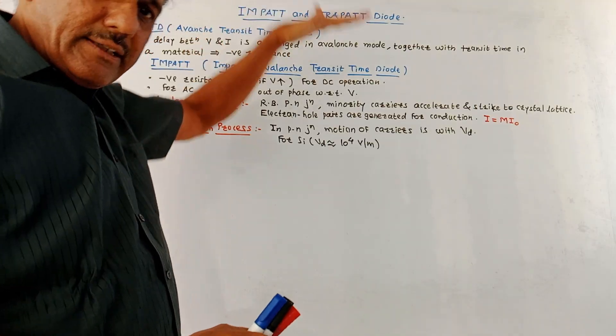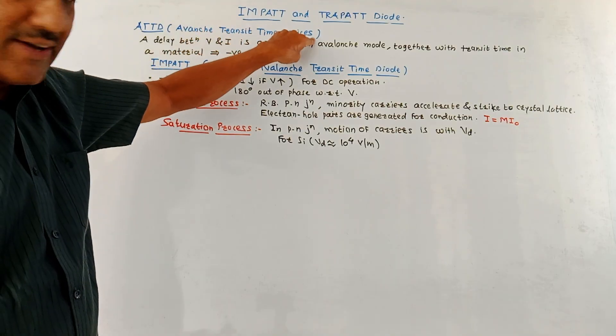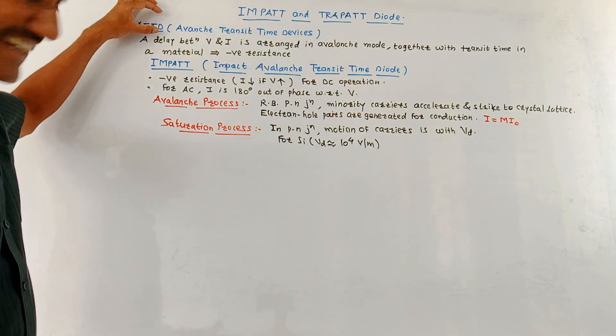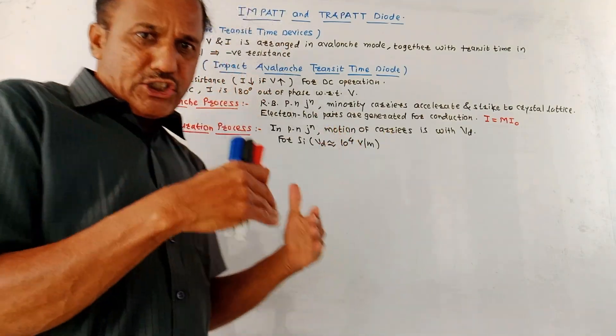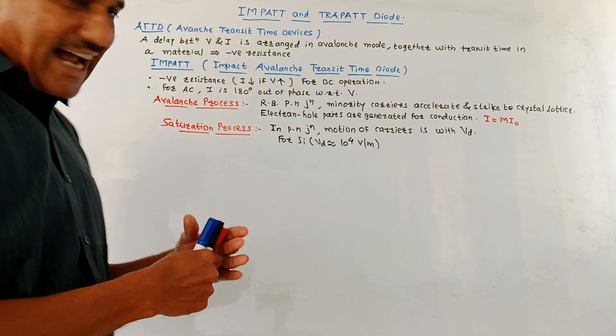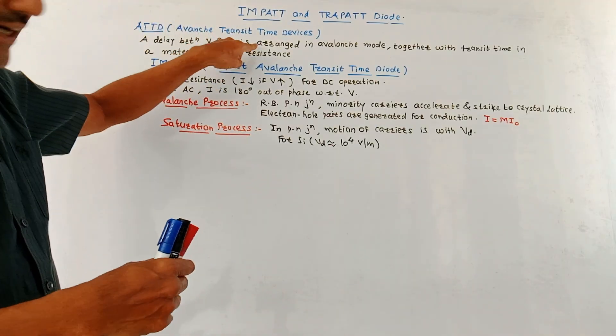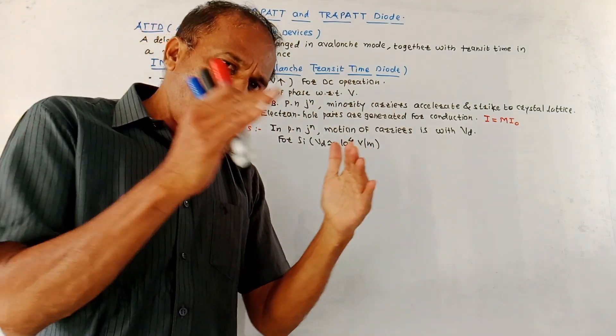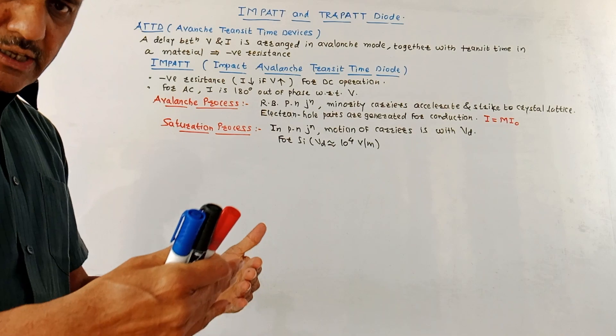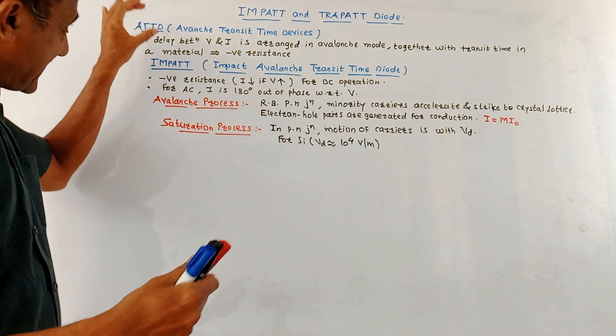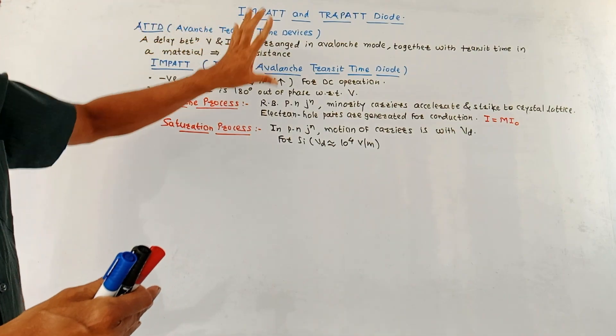These diodes are under the category called avalanche transit time devices, that is ATTD. The basic principle of working of this ATTD is that if we manage a delay between voltage and current in an avalanche mode along with the transit time, then the material shows negative resistance. This is the major characteristic of avalanche transit time devices.